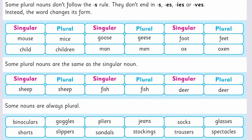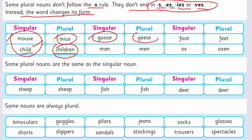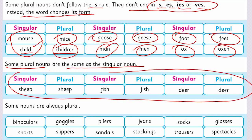Look at page number 26. Some plural nouns don't follow the S rule — they don't end in S, ES, or VES. Instead, the word changes its form entirely. These are irregular nouns. Like: mouse → mice, child → children, goose → geese, foot → feet, man → men, ox → oxen. Some plural nouns are the same as the singular noun — they can be both singular and plural, like: sheep → sheep, fish → fish, deer → deer.